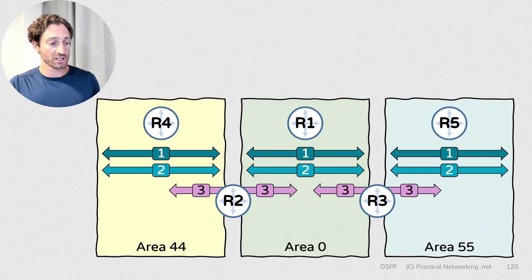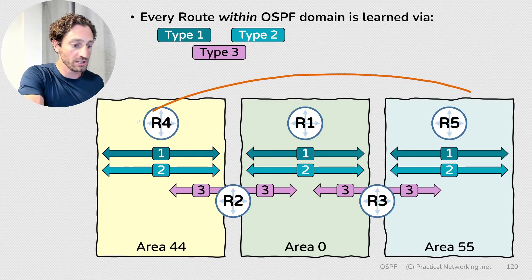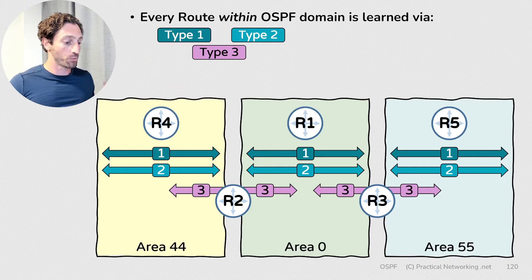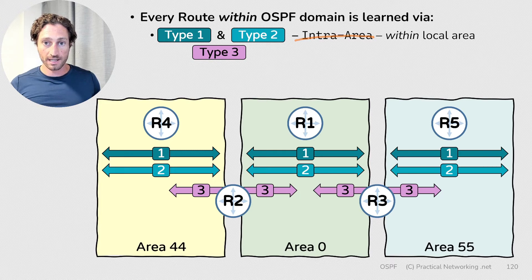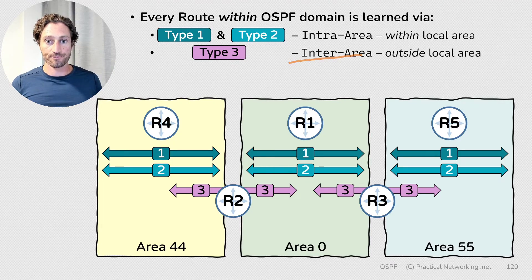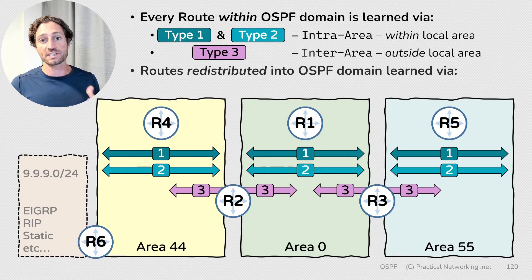So far we've talked about Type 1, Type 2, and Type 3 LSAs. Notice that every single route within an OSPF domain can be learned using only these three types. Type 1 and 2 LSAs teach every area about their own local area, creating what are known as intra-area routes. Type 3 LSAs teach every area about IP subnets in other areas — these are known as inter-area routes. But Type 4 and Type 5 LSAs only exist if you have an ASBR redistributing foreign networks into OSPF — these are known as external routes.